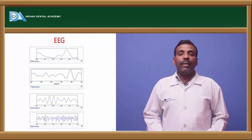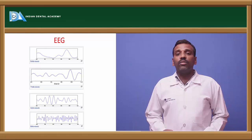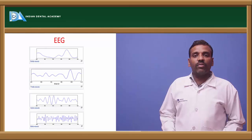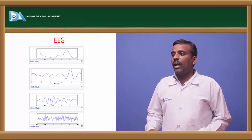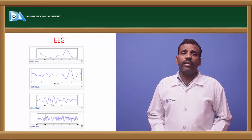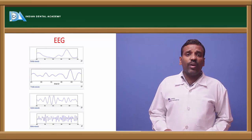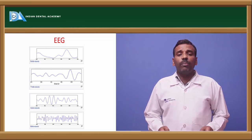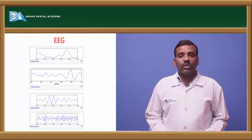EEG (electroencephalogram) records brain activity. It contains four types of waves: alpha waves, beta waves, theta waves, and delta waves. Delta waves are very rare; alpha, beta, and theta waves are common. These waves are generally recorded during sleep or subconscious states of the brain with closure of the eyes.